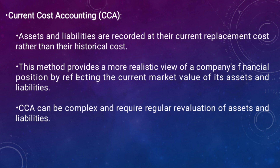The second method is current cost accounting (CCA). Assets and liabilities are recorded at their current replacement cost rather than their historical cost. This method provides a more realistic view of a company's financial position by reflecting the current market value of assets and liabilities. However, CCA can be complex and requires regular revaluation of assets and liabilities.